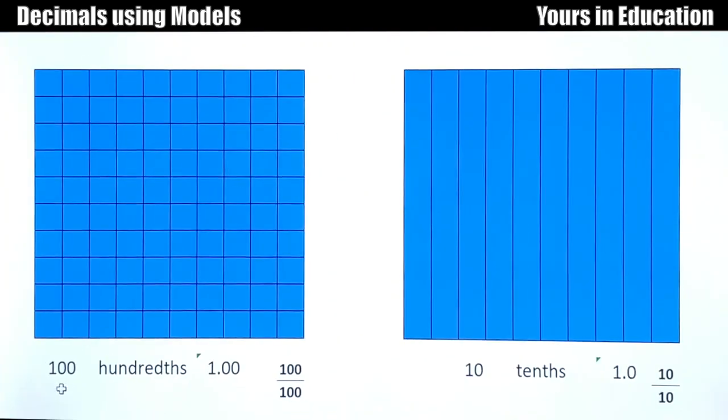And to finish, we have 100 hundredths, which is 1 whole, which is 1.00, numerator 100, denominator 100. And you know that if the numerator and the denominator are the same, that means it is a whole. On the right side of this model with the tenths, we have 10 tenths equals to 1.0, and 10 numerator, denominator 10. Remember, if the numerator and the denominator are equal, that means that is a complete whole.